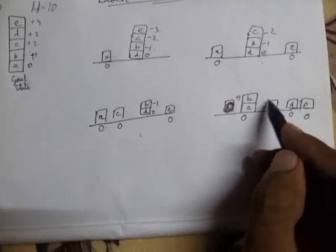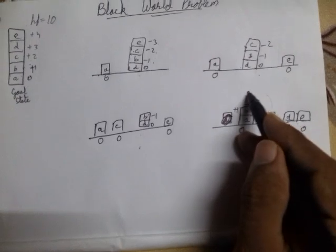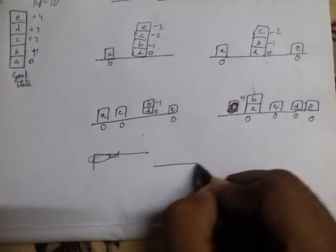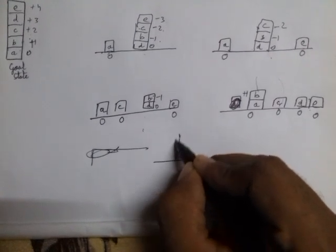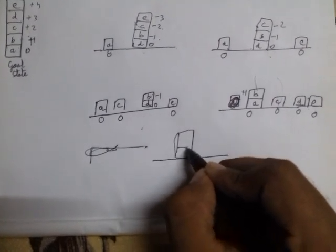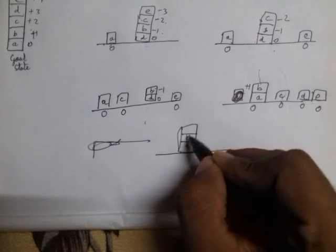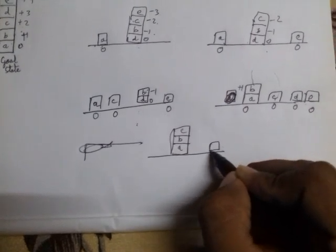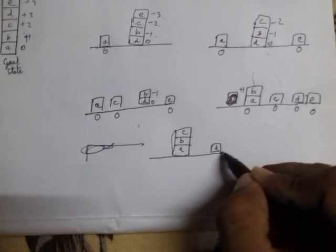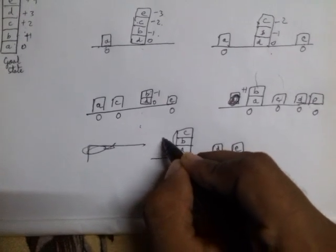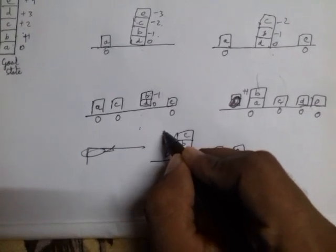The next step is to place block C over B, as required by the goal state. Now A is 0, B is +1, and C is +2.